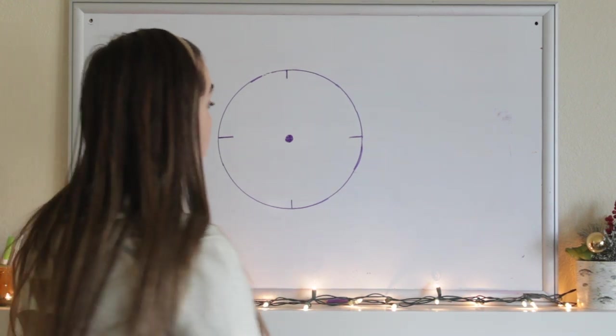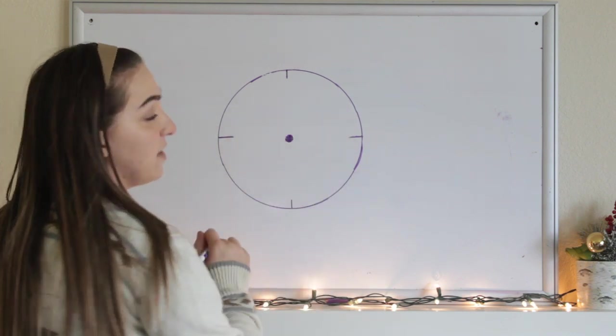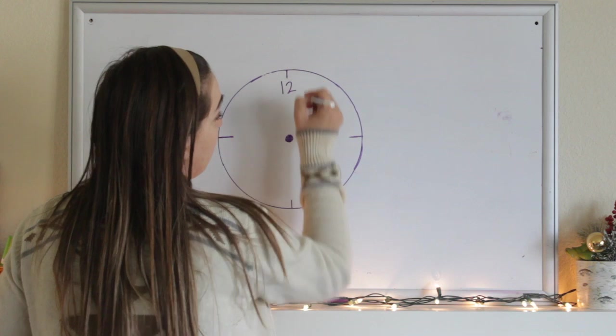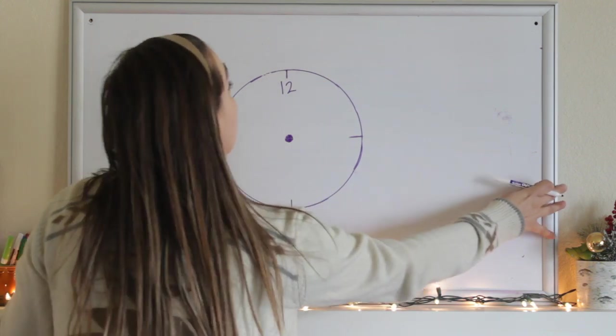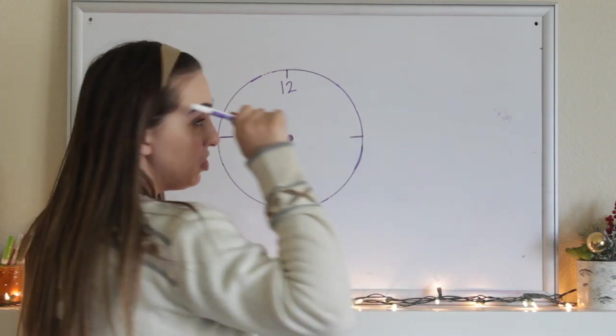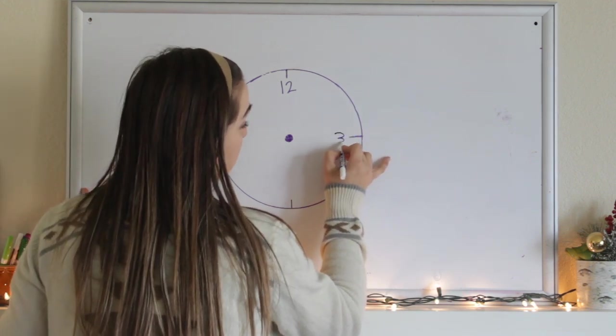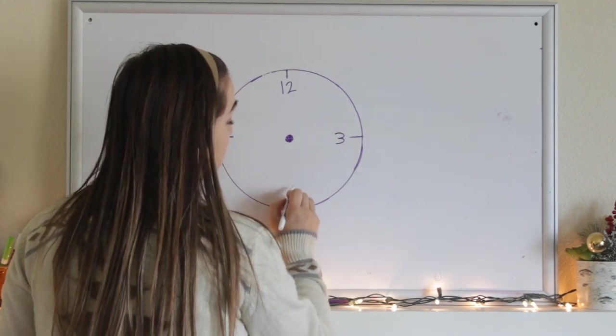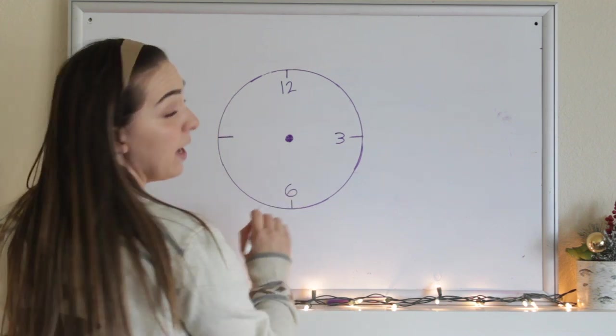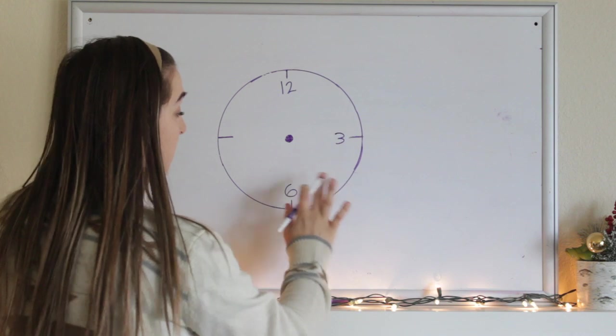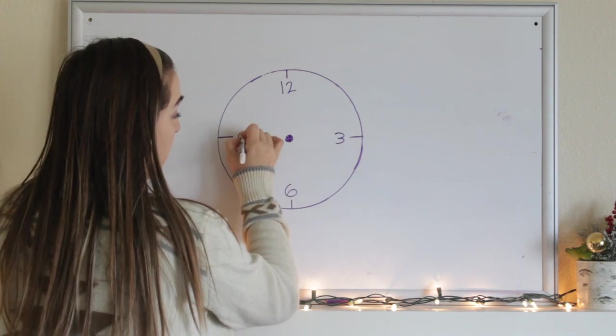So now what I'm going to do is label these different spots that I've made for myself. So I know that 12 is always on the top, so I'll start with 12. And just by my knowledge of thinking of what a clock looks like, I know that a 3 goes right here. Then we skip some, we say 6 goes here. I'm skipping because I don't have my other lines in the middle. So just stick with me. And right here, I'm going to put a 9.